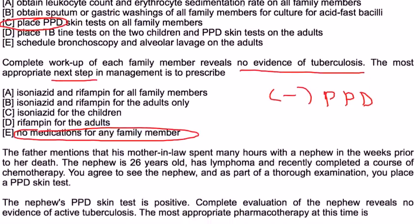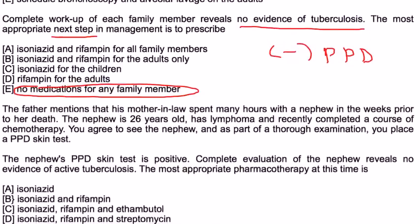And then finally, the father mentions that his mother-in-law spent many hours with a nephew in the weeks prior to her death. This nephew is 26 years old, has lymphoma, and recently completed a course of chemo. You agree to see the nephew. As part of a thorough exam, you place a PPD. The PPD test is positive. Then complete evaluation of the nephew reveals no evidence of active tuberculosis. The most appropriate pharmacotherapy is...